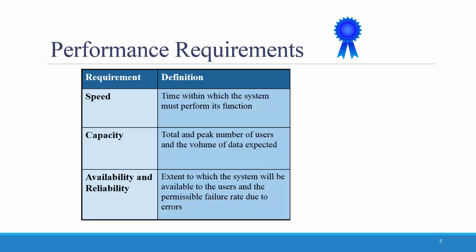There are three subcategories of performance requirements. The first is speed, which involves the time within which the system must perform a function. An example would be: Our system should have network transaction response times of four seconds or less. The second category is capacity, which involves the total and peak number of users and the volume of data expected. One example could be: A maximum of 2,000 simultaneous users at peak use times.